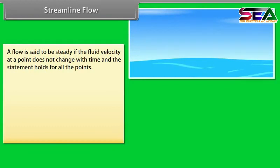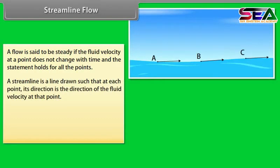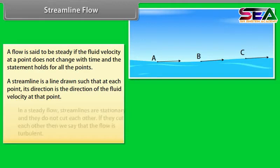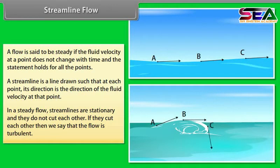Streamline flow: A flow is said to be steady if the fluid velocity at a point does not change with time, and this holds for all points. A streamline is a line drawn such that at each point its direction is the direction of the fluid velocity at that point. In a steady flow, streamlines are stationary and do not cut each other. If they do cut each other, the flow is said to be turbulent.